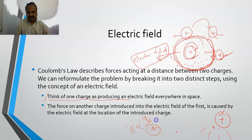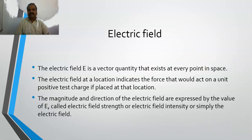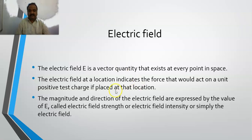Later it was actually determined that E is proportional to Q by D squared — that we will see in the later part. And as already said, electric field is also a vector quantity which exists at every point in space.